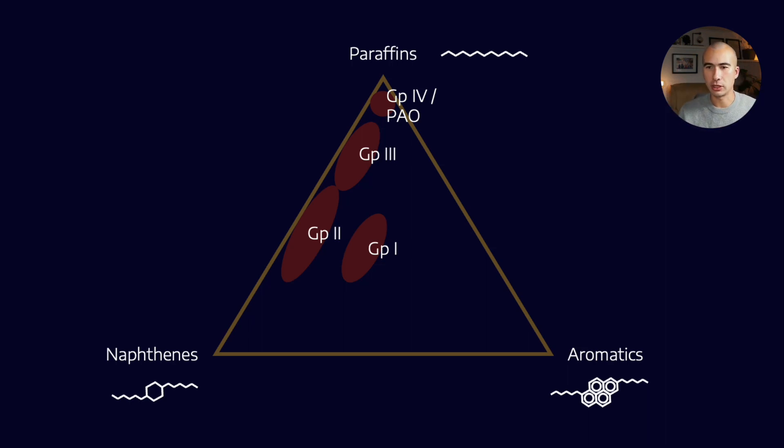Now, group 4 PAOs are almost completely paraffinic. When we say paraffinic, we don't actually mean paraffins because paraffins are straight-chain hydrocarbons that have not-so-great pour-point properties. They make crystal structures that encapsulate the base oil. So what we actually want is isoparaffins, so they're branched paraffins, and a PAO is purely a branched paraffin.